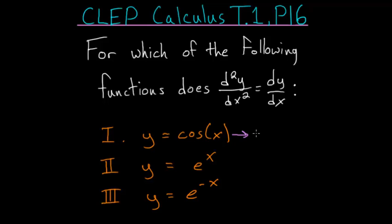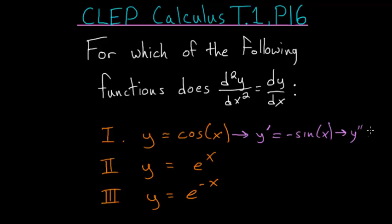Let's take its first derivative. So dy/dx, or y prime, would be equal to minus the sine of x. And if we take its derivative again, the second derivative of y with respect to x, we get minus the cosine of x.